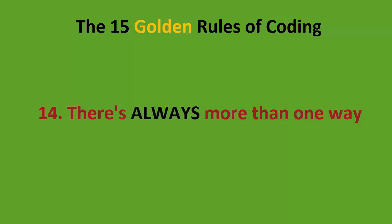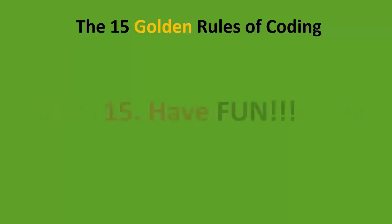Number 14: there is always more than one way. If you can write a piece of code that works perfectly, is solid, and is repeatable, but it looks different to someone else's solution — don't worry about it. There is always more than one way.